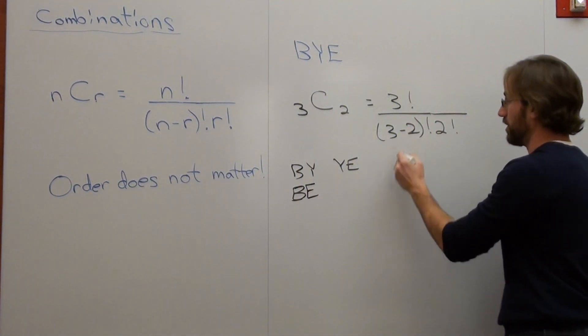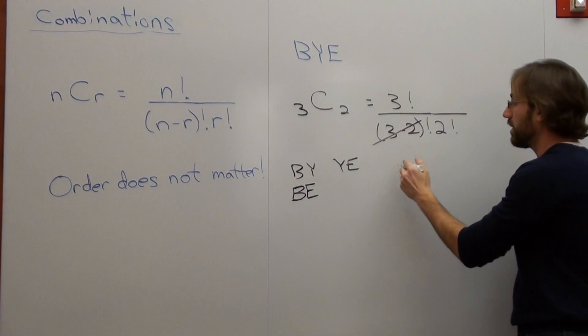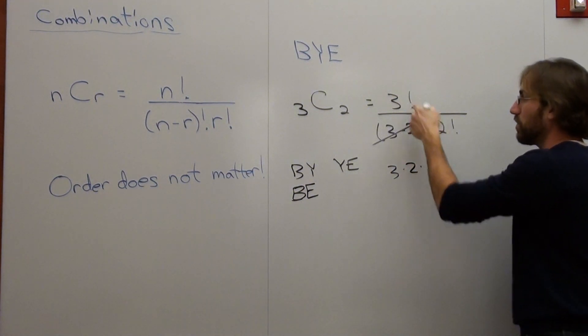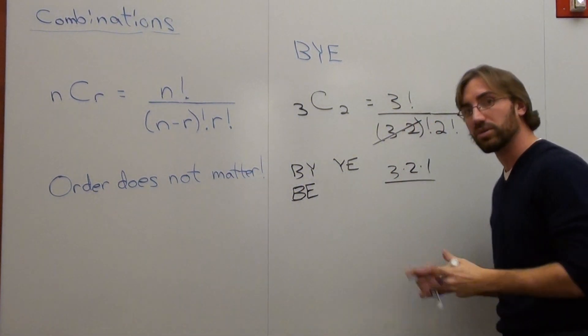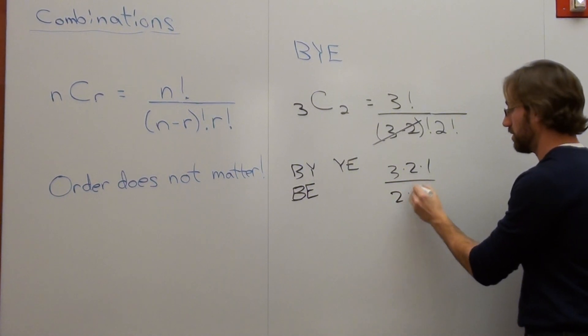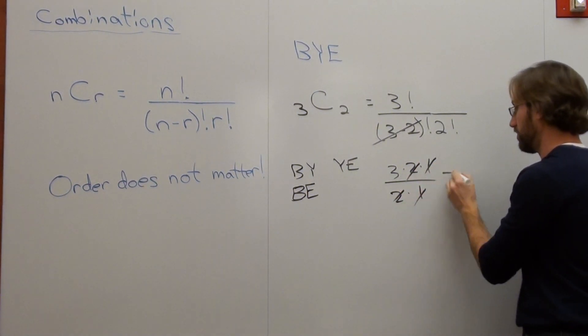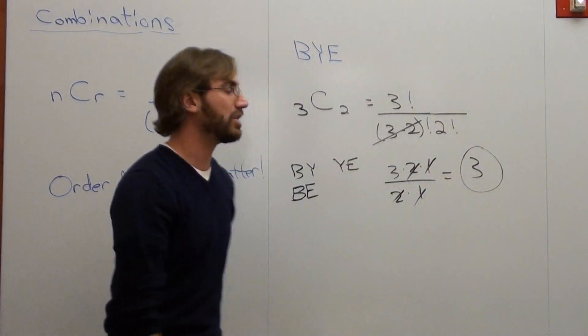So that's 3 factorial. That's 1 factorial, so that's just 1. It's 3 times 2 times 1 is 3 factorial over 2 factorial, which is 2 times 1. 3 possible combinations. But we already discovered that using the simple sample space.